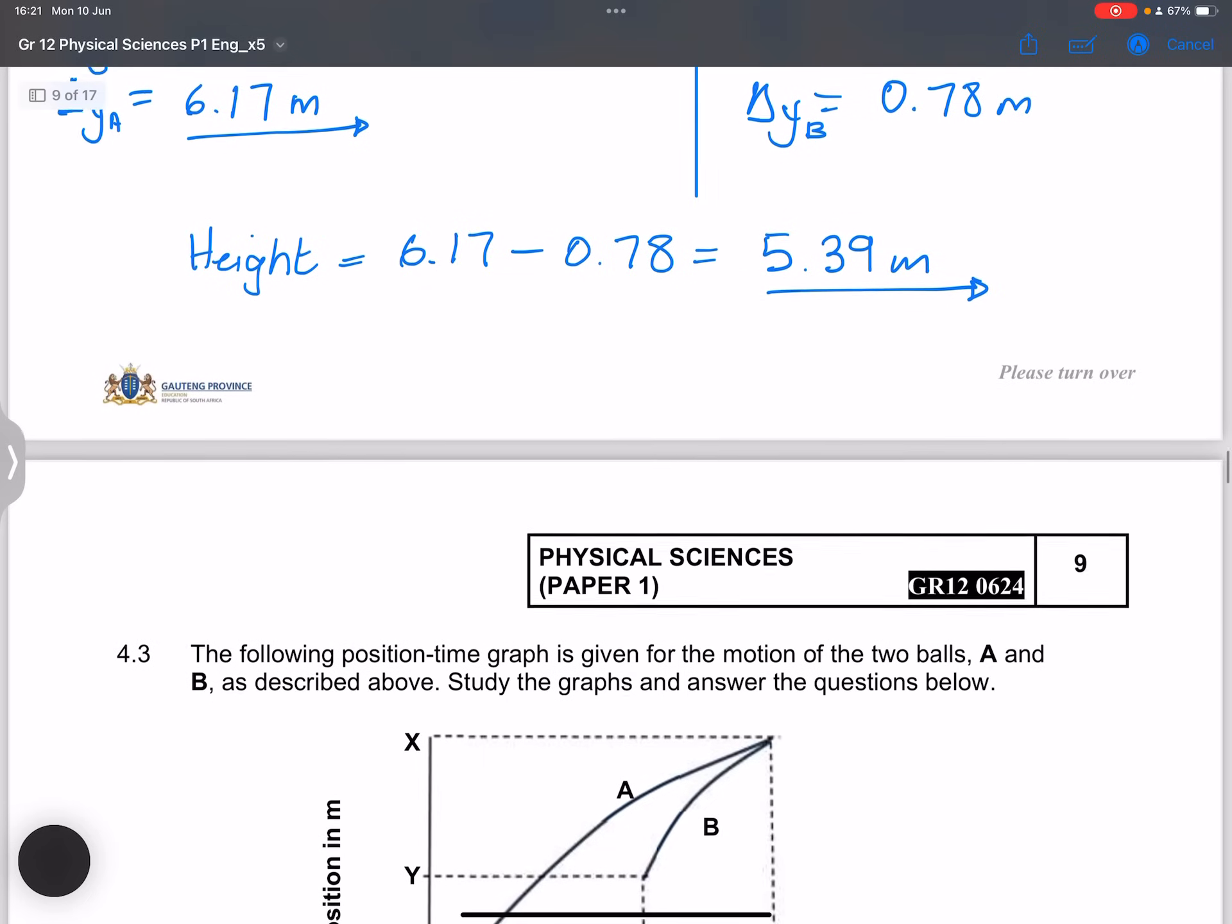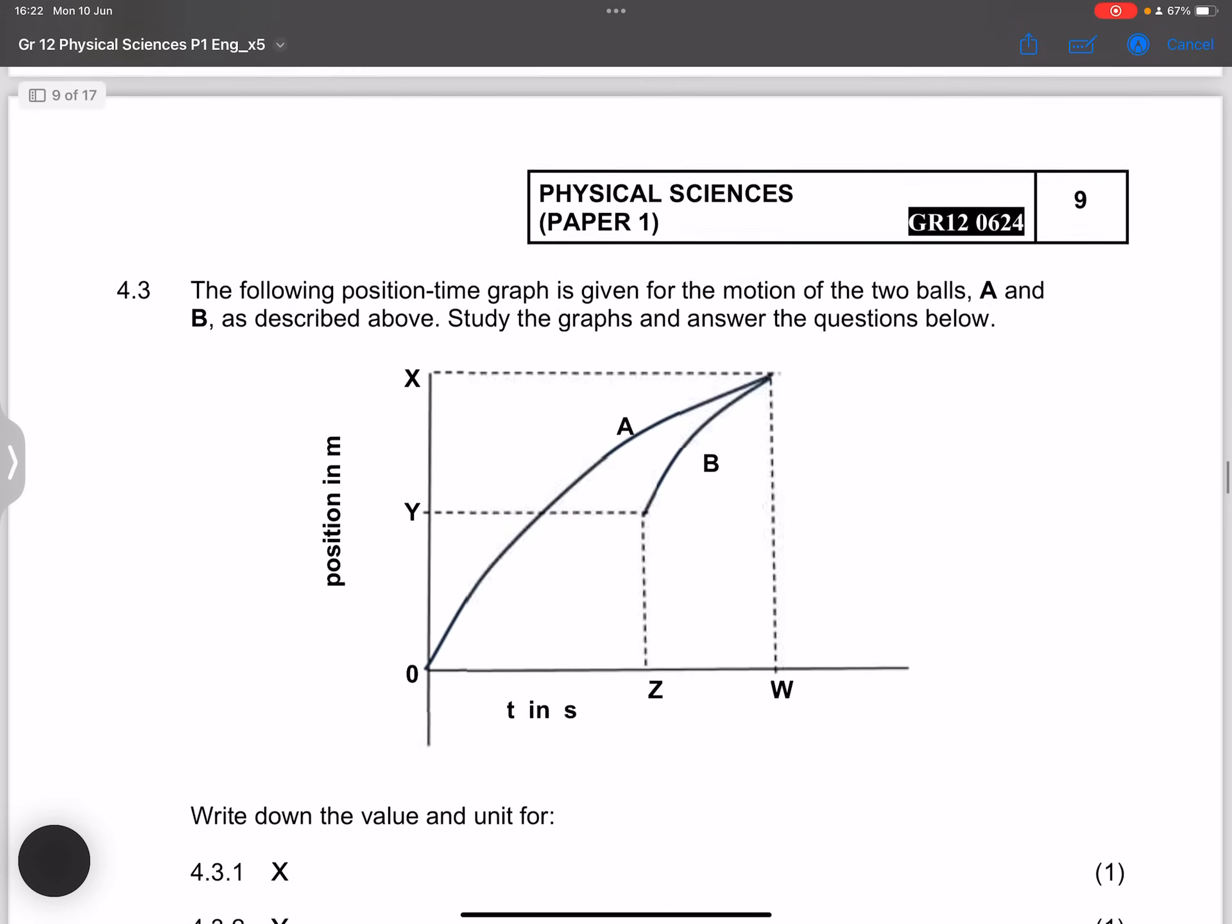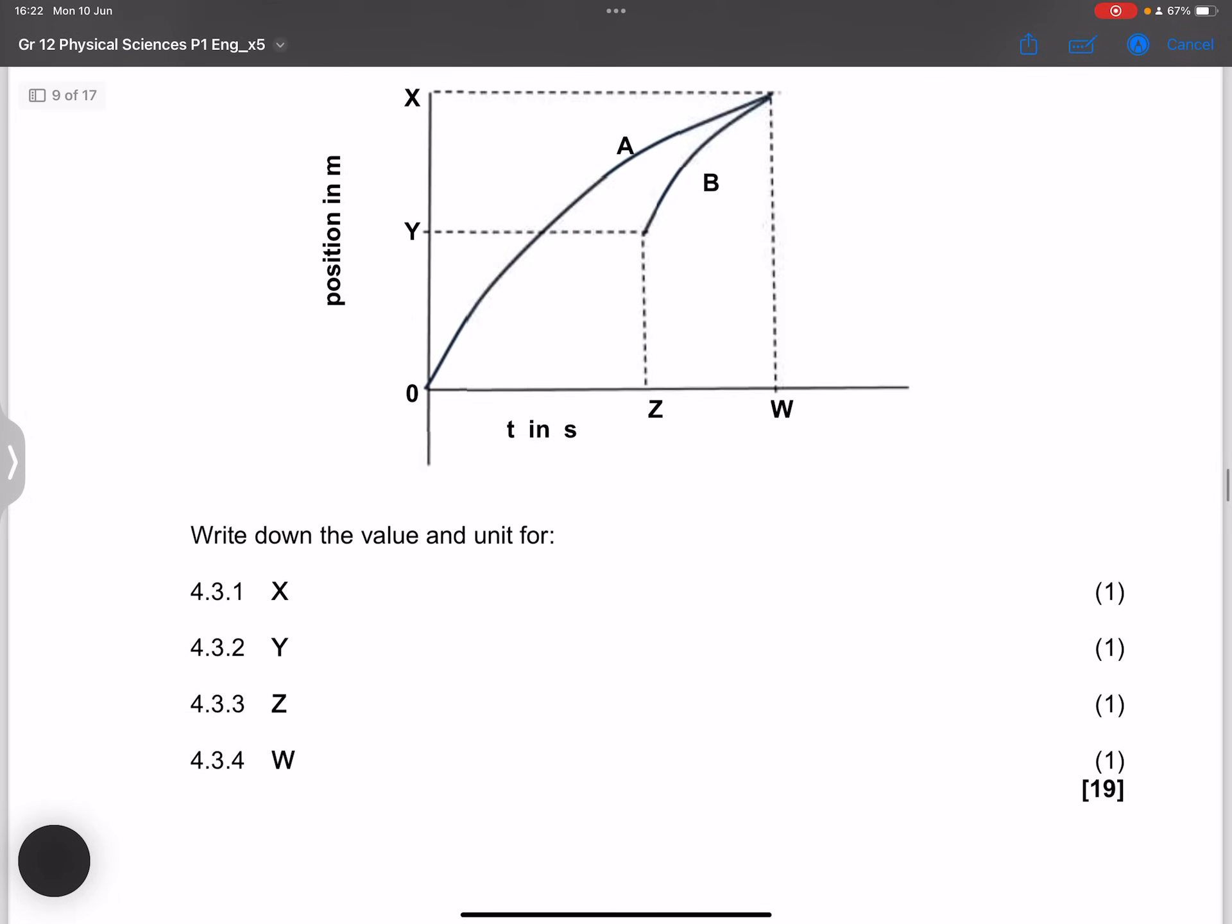Let's go to the next question. They say the following position time graph is given for the motion of the two balls A and B as described above. They say study the graphs and answer the questions below. So definitely that is the displacement for A on the first graph and the displacement for B.